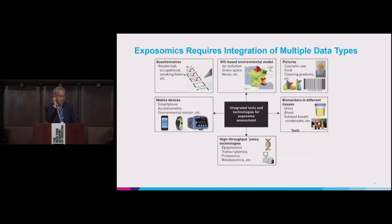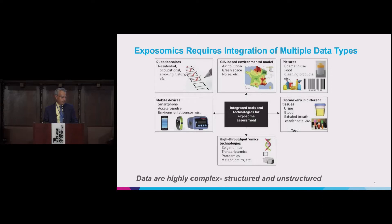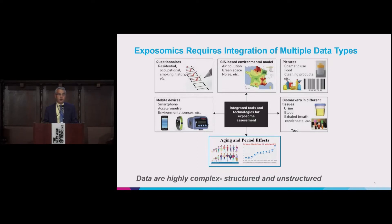This is a slide that Dr. Wojcik actually showed earlier. It talks about all the different types of data that get involved in the measurement of the exposome — questionnaires, GIS maps, pictures, biomarkers, and mobile wearable devices, all integrated in. The data are highly complex, structured and unstructured. But there are also aging and period effects. Your exposome changes if you're 2 years old versus 15 versus 30 versus 80 — it's constantly changing by life stage in predictable ways. There are also period effects: the exposome in the United States is different today than it was in 1990 or 1970, changing over time because of culture, society, and different advances.